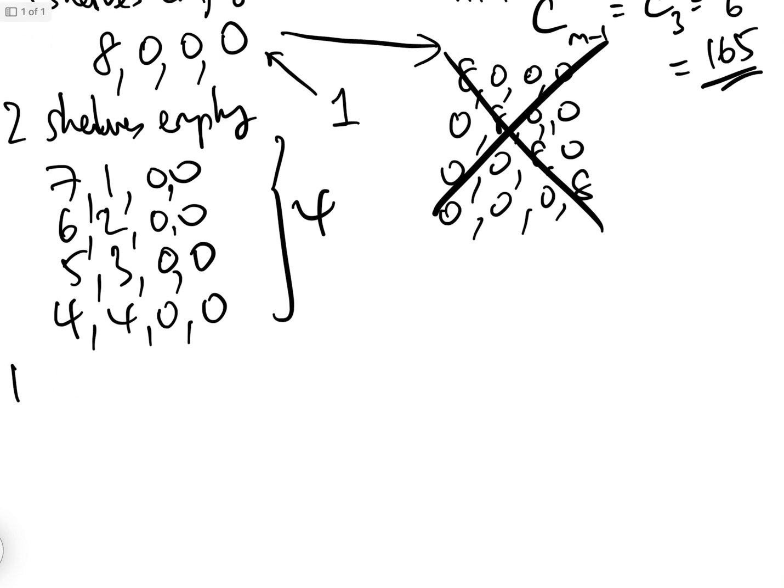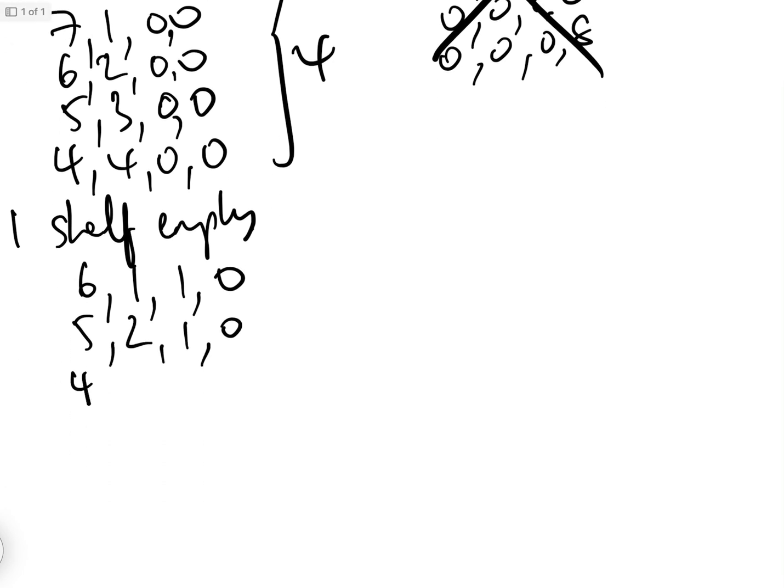OK, what about if there's one shelf empty? Well, if there's one shelf empty, let's have a think. 6, 1, 1, 0, then 5, 2, 1, 0, then 4, 3, 1, 0, then 4, 2, 2, 0, or 3, 3, 2, 0, which is five possibilities.